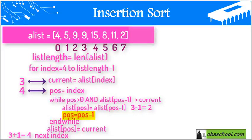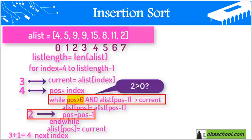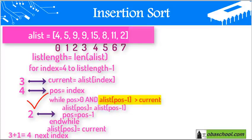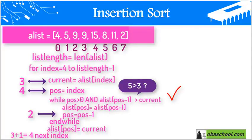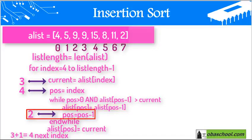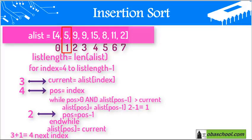We continue to pause equal pause minus 1, so now 3 minus 1 equals 2. We re-enter the while loop: while pause (which is 2) is greater than 0, condition is true. And list[pause-1], which is 2 minus 1 = index 1, contains the number 5. Is 5 greater than the current value of 3? This condition is true, so we put list[pause] at index 2 the value from list[1], which is 5, placing 5 at index 2.